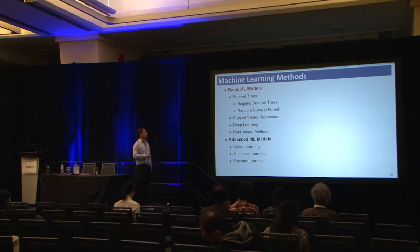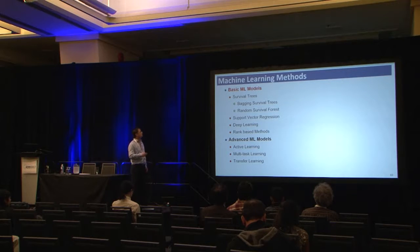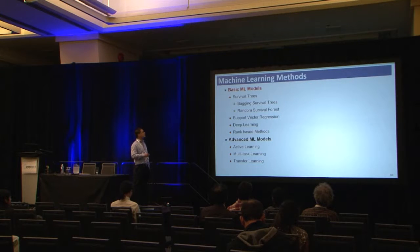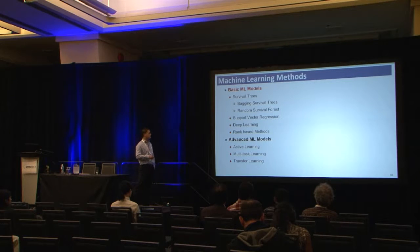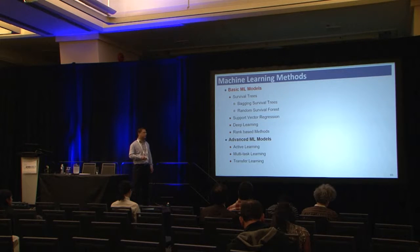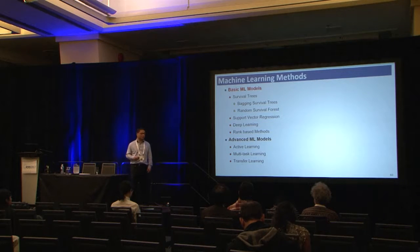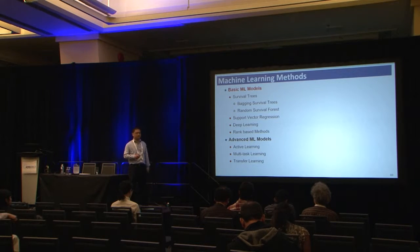As mentioned at the end of the first part, in this part of the presentation on machine learning-based methods, I will cover: survival tree and tree-based ensemble methods, support vector regression methods, neural network and deep learning methods, and ranking-based methods. Additionally, with recent developments in the machine learning community, I will also briefly discuss advanced methods such as active learning, multi-task learning, and transfer learning.